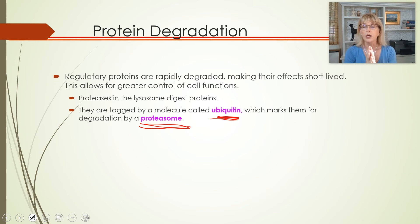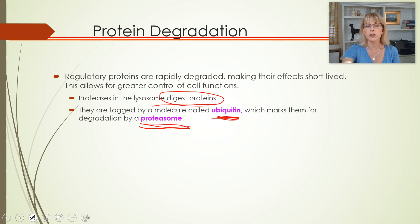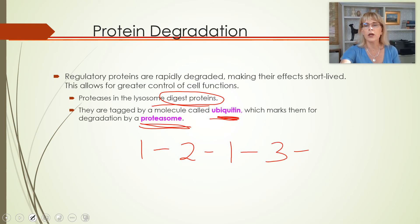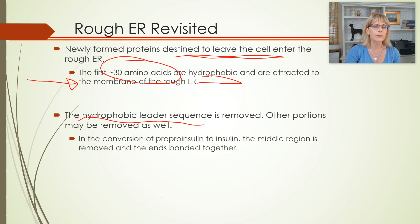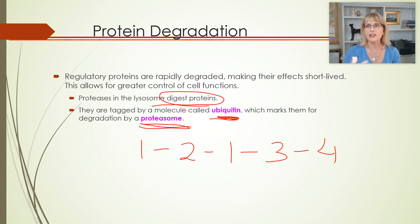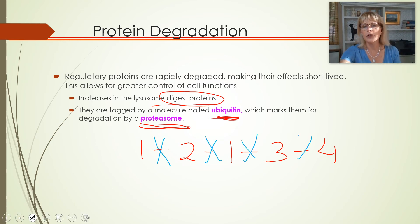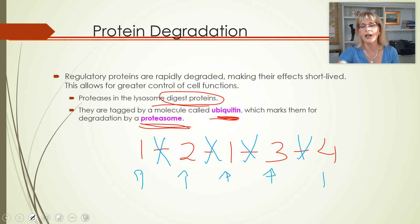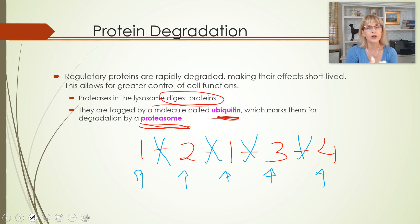A proteasome is a special vesicle inside the cell where proteases digest the proteins. If a protein is made of amino acids one, two, three, and four, the protease cuts them apart. Those amino acids can then be used to make a new protein — the protein got destroyed, but all its individual parts were recycled and can become part of an entirely different enzyme or protein.